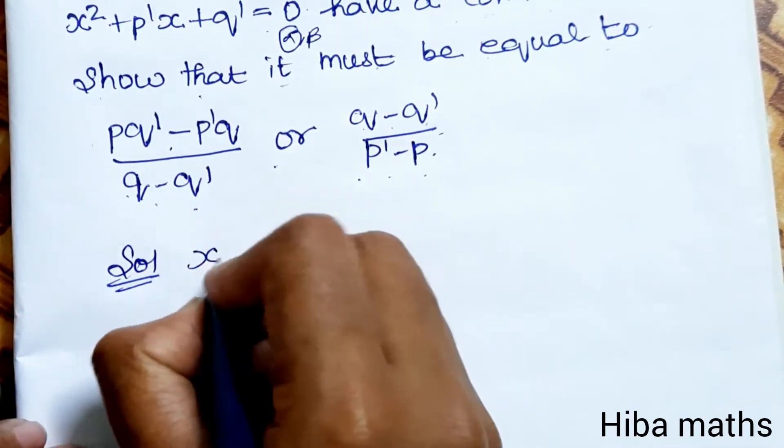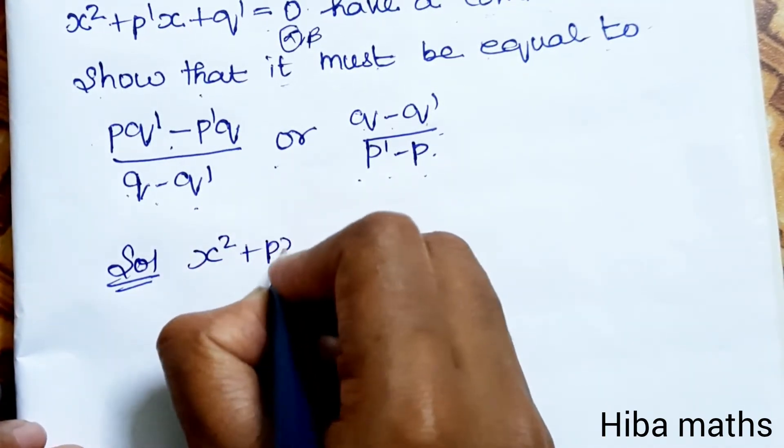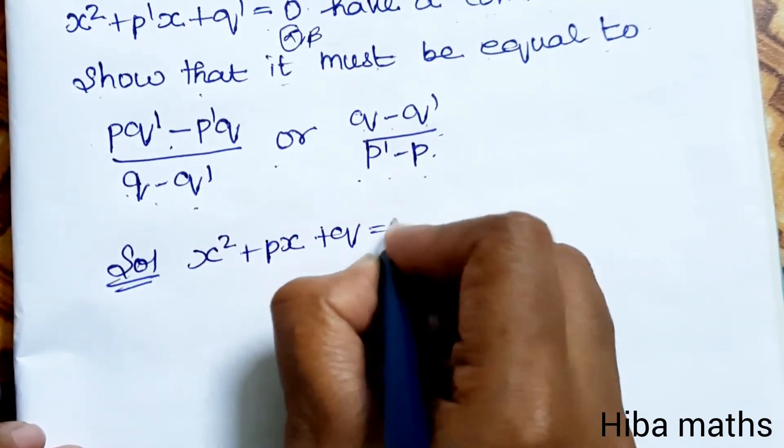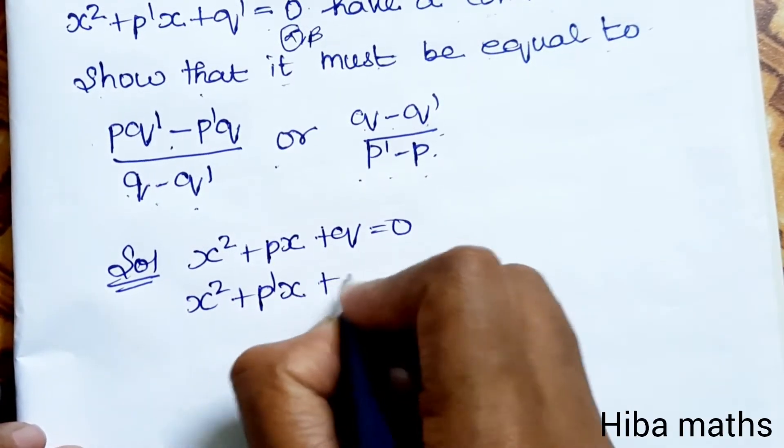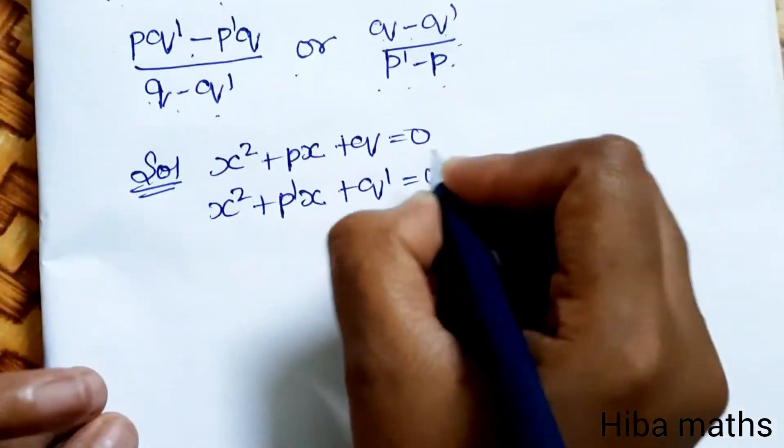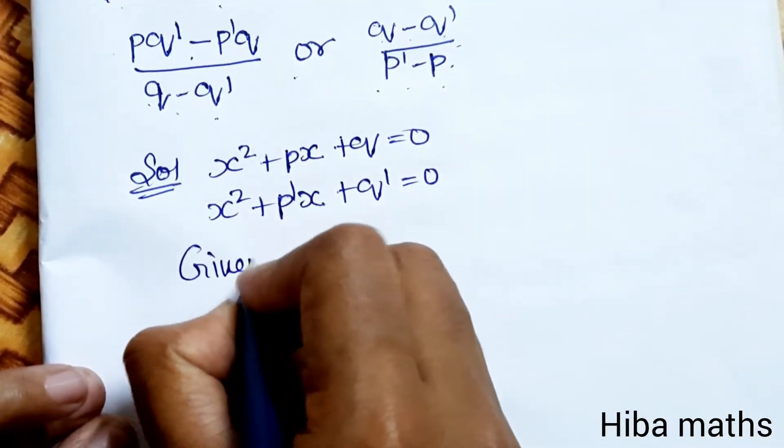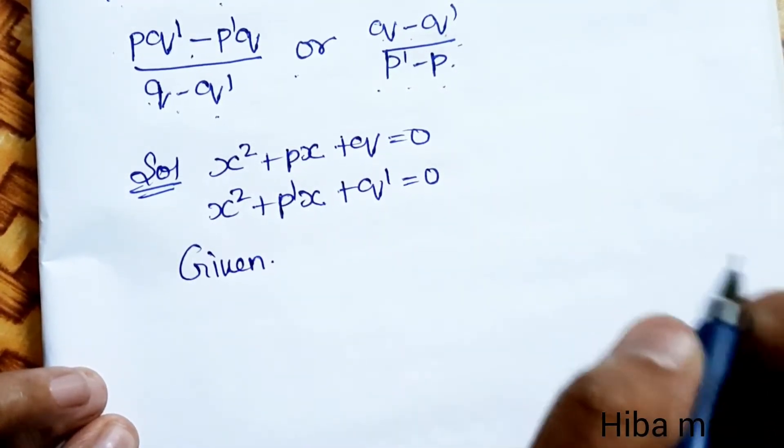Solution: First equation x² + px + q = 0, second equation x² + p'x + q' = 0, and it has one common root.